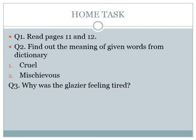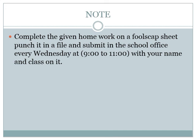Students, you can see your home task on your screen. There are three questions. Question number one: read pages 11 and 12. Question number two: find out the meanings of given words from the dictionary — the words are 'cruel' and 'mischievous.' Question number three: why was the glazier feeling tired? Complete the given homework on a foolscap sheet, punch it in a file, and submit it in the school office every Wednesday from 9 to 11, with your name and class on it. Okay, bye students — stay home, stay safe, bye!